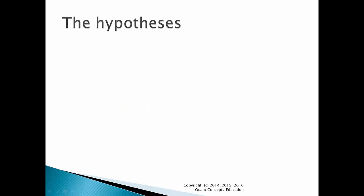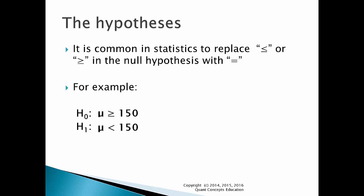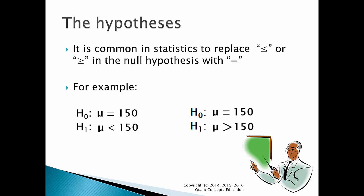The hypotheses we've just set out may look slightly different from those in your course or textbook. This is because it is common in statistics to replace the less than or equal to and the more than or equal to signs with an equal sign. For example, if the null hypothesis is that the population average is larger than or equal to 150, and the alternate hypothesis is that the average is less than 150, we can replace the larger than or equal to sign in the null hypothesis with an equal sign. Both null hypotheses are correct. It's best to use a convention that your teacher or textbook prefers, though technically both methods are correct.